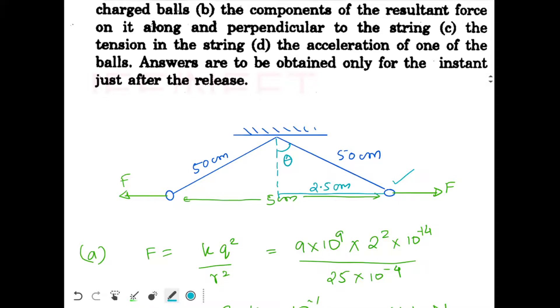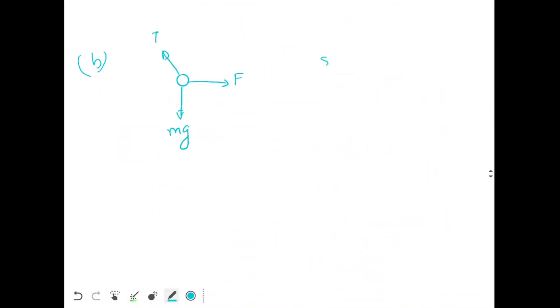So this length will be 2.5 cm. So sin theta will be 2.5 cm by 50 cm. This is actually very small, 0.05. Now since sin theta is very small, that means theta is also very small. So sin theta is approximately equal to tan theta, approximately equal to theta, and they will all be equal to 0.05. And we will take cos theta to be approximately equal to 1.